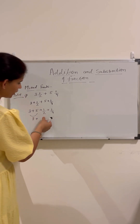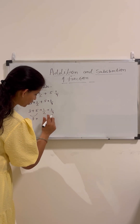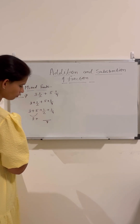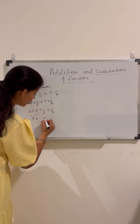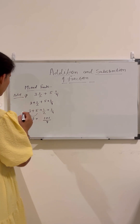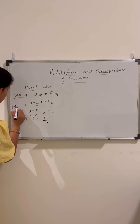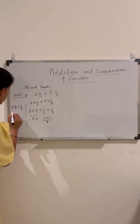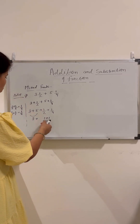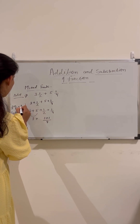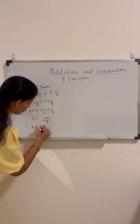We can see that 1 by 2 and 1 by 4 are unlike fractions, so we take the LCM of 2 and 4, which is 4. Converting 1 by 2 into a like fraction: 1 by 2 becomes 2 by 4. So 2 by 4 plus 1 by 4 equals 3 by 4. Therefore we have 8 plus 3 by 4.